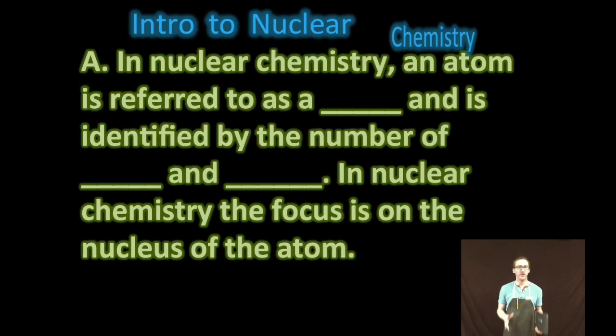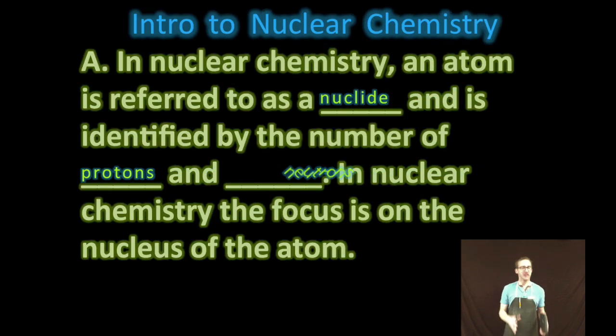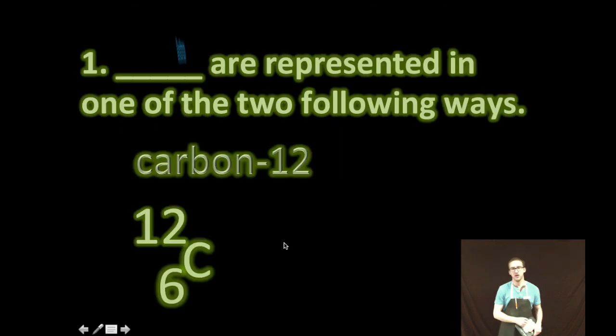To start us off, nuclear chemistry is very different from the type of chemistry we've been doing throughout the entire year. Nuclear chemistry focuses on the nucleus of the atom instead of the electron cloud. Because of that special focus on the nucleus, we're going to use the term nuclide, which is just an atom, but our focus is going to be on the number of protons and neutrons in the nucleus.